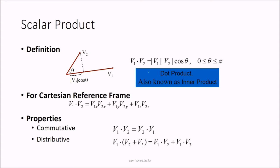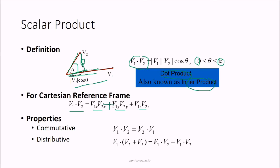The scalar product (dot product or inner product) of v1 and v2 equals v1·v2·cos(θ), where θ lies between 0 and π. The projection of v2 onto v1 is v2·cos(θ). For Cartesian frames, you multiply corresponding x, y, z components and add them. This is commutative: v1·v2 = v2·v1, and distributive: v1·(v2+v3) = v1·v2 + v1·v3.